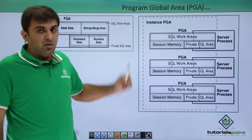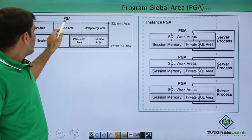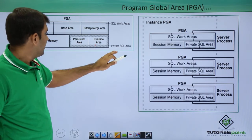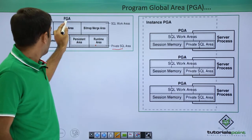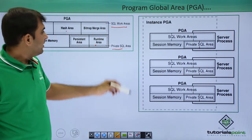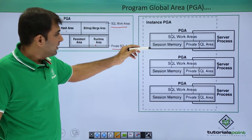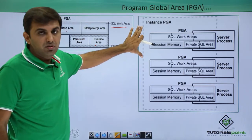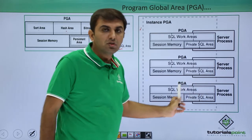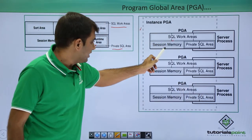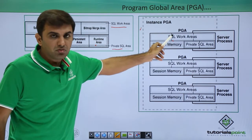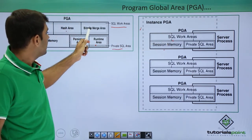This is the architecture of your PGA. Under the individual PGA, different components are: session memory, persistent area, and run time area — this is called the private SQL area. There is also the sort area size, hash area, and bitmap merge area — these are called the SQL work area. Under the private SQL area you have two things: persistent area and run time area. Under the SQL work area we have sort area size, hash area size, and bitmap merge area.